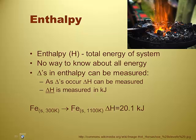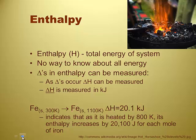A good example of an energy change: when a blacksmith works iron, it changes physical properties based on how hot it is. They want a temperature of about 1,100 Kelvin. It turns out that going from room temperature iron to the right working temperature — from 300 Kelvin to 1,100 Kelvin — takes about 20.1 kilojoules of energy for a mole of iron. That's a lot of energy to make the iron malleable.